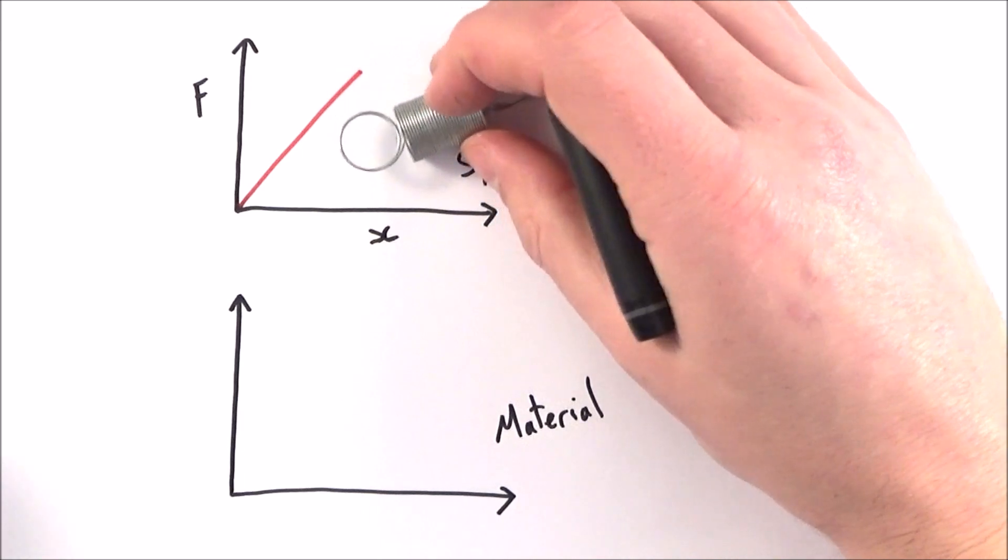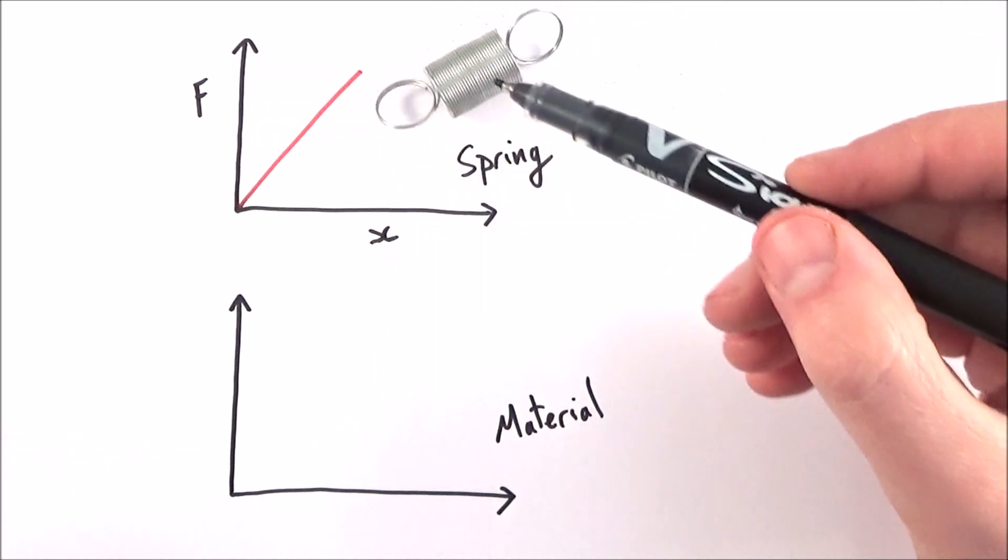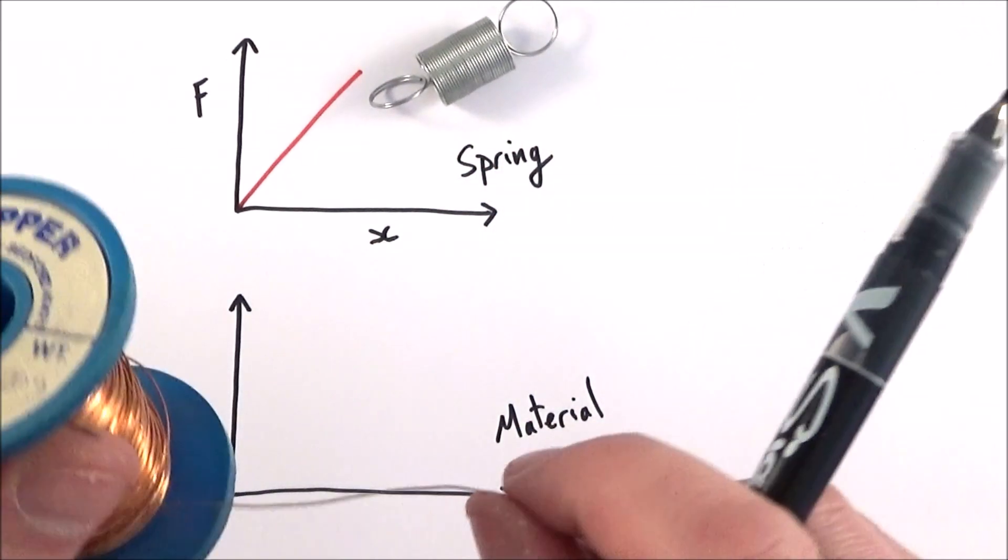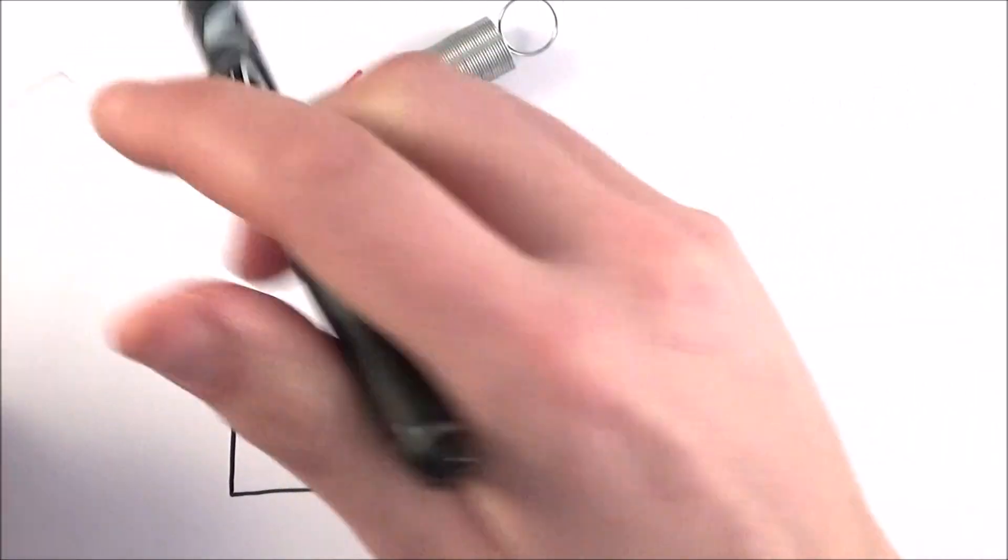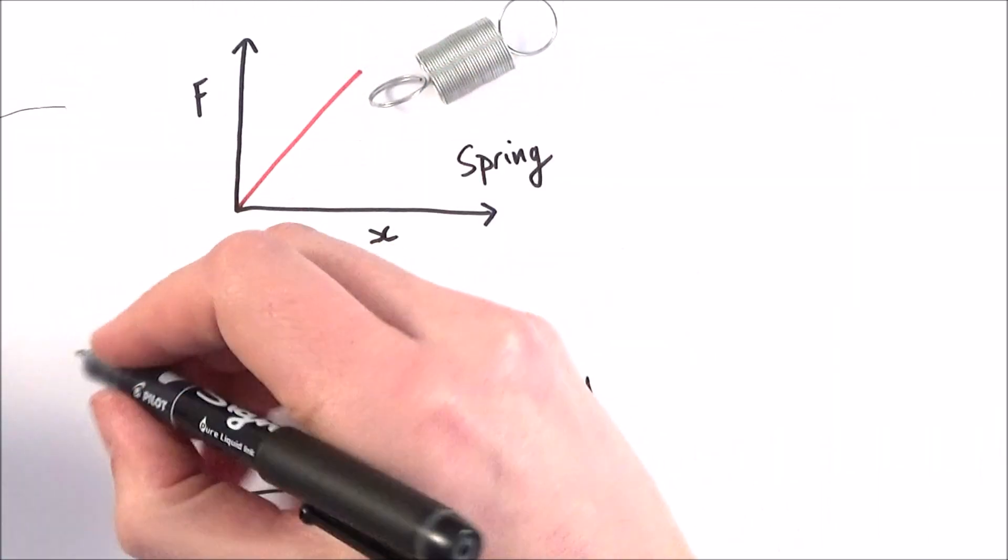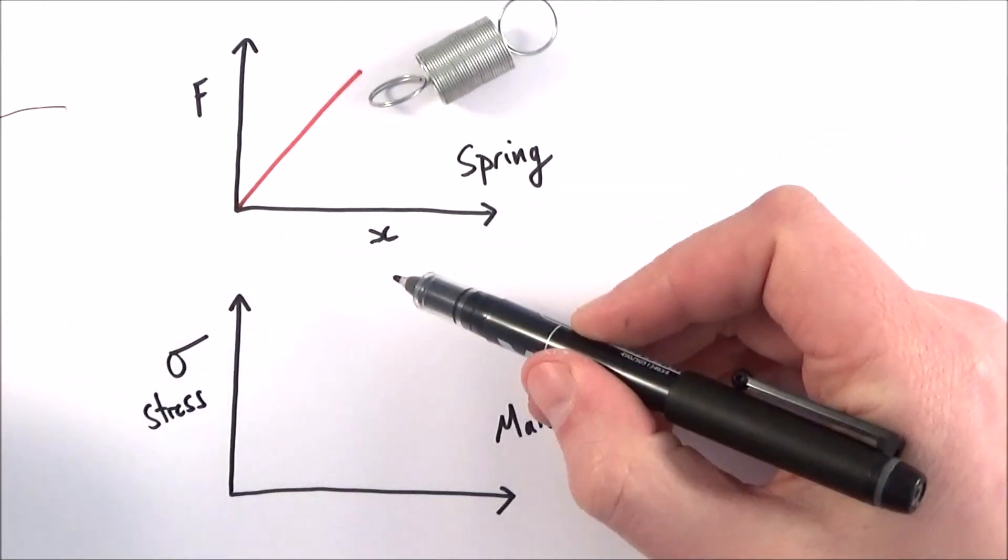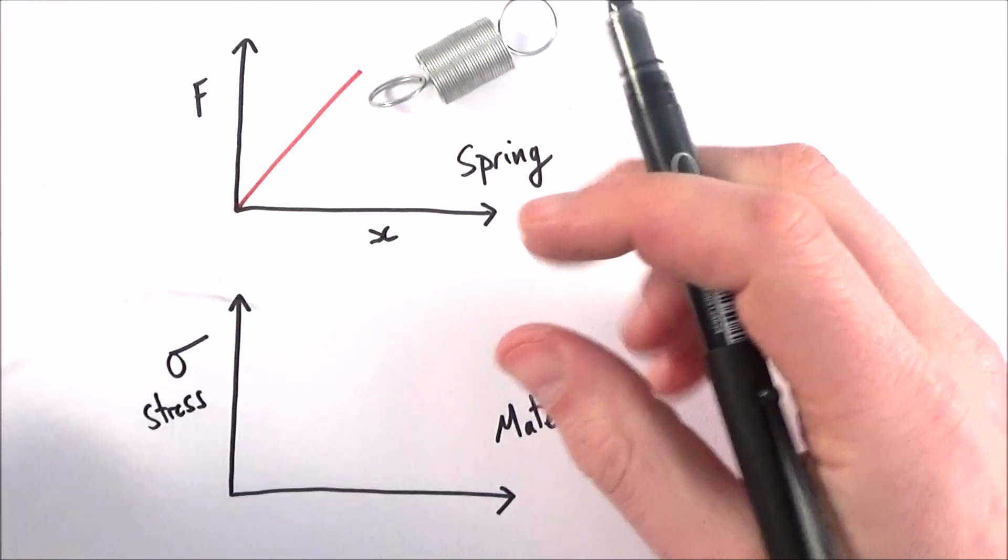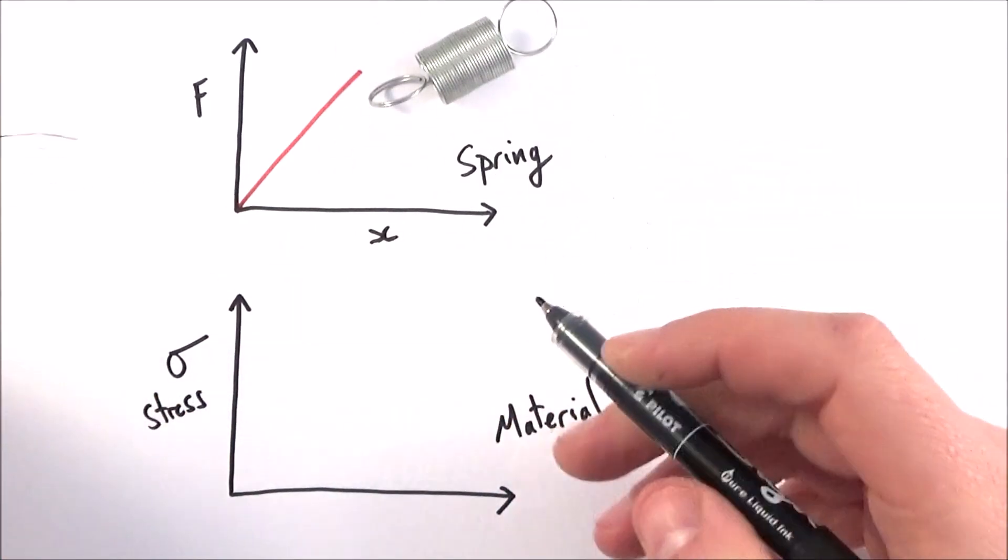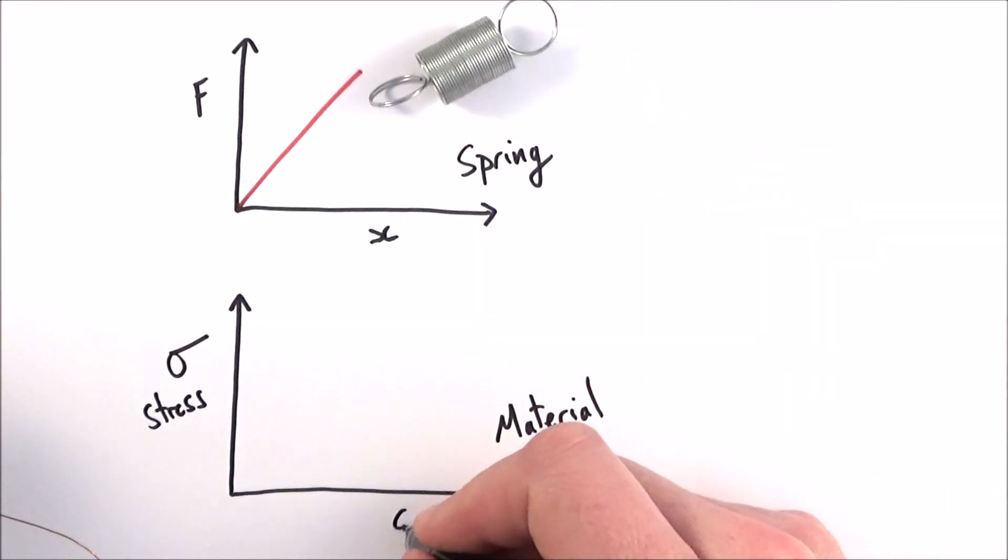Now if we look at maybe rather than this particular object here, but rather material instead, here I've got some copper. What we could do is rather than looking at force, we can look at the force per unit area, which is our stress. And rather than looking at the extension, we could look at the extension relative to its original length, and therefore we can look at the strain.